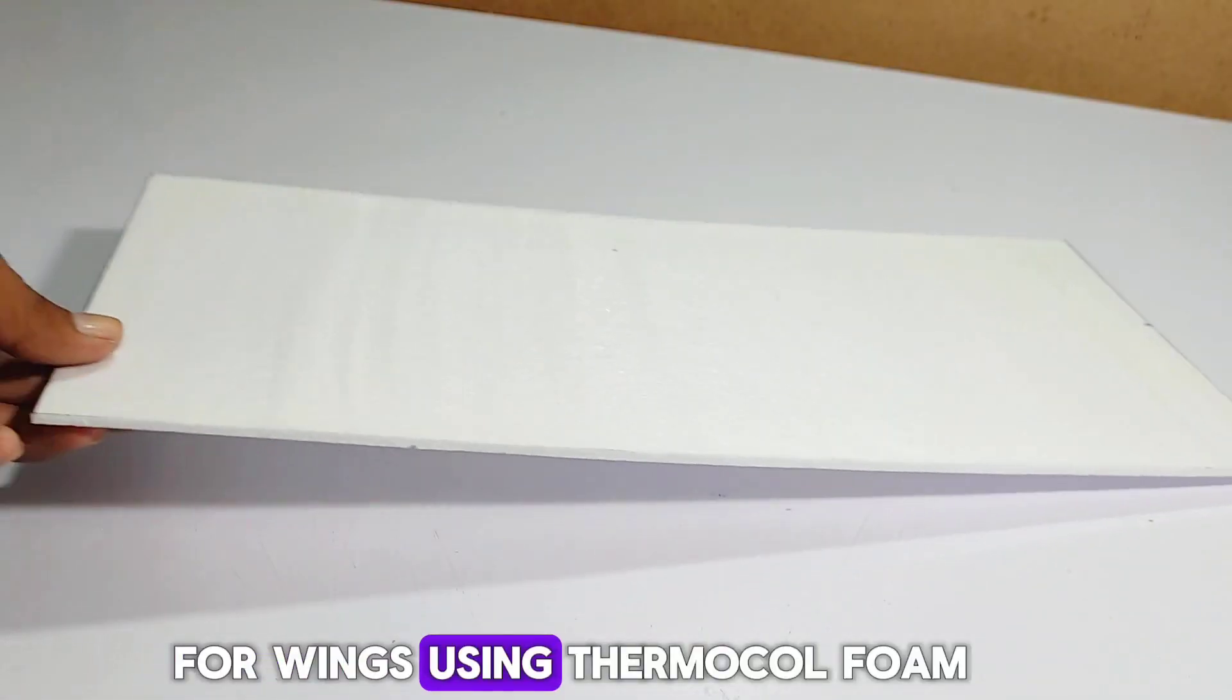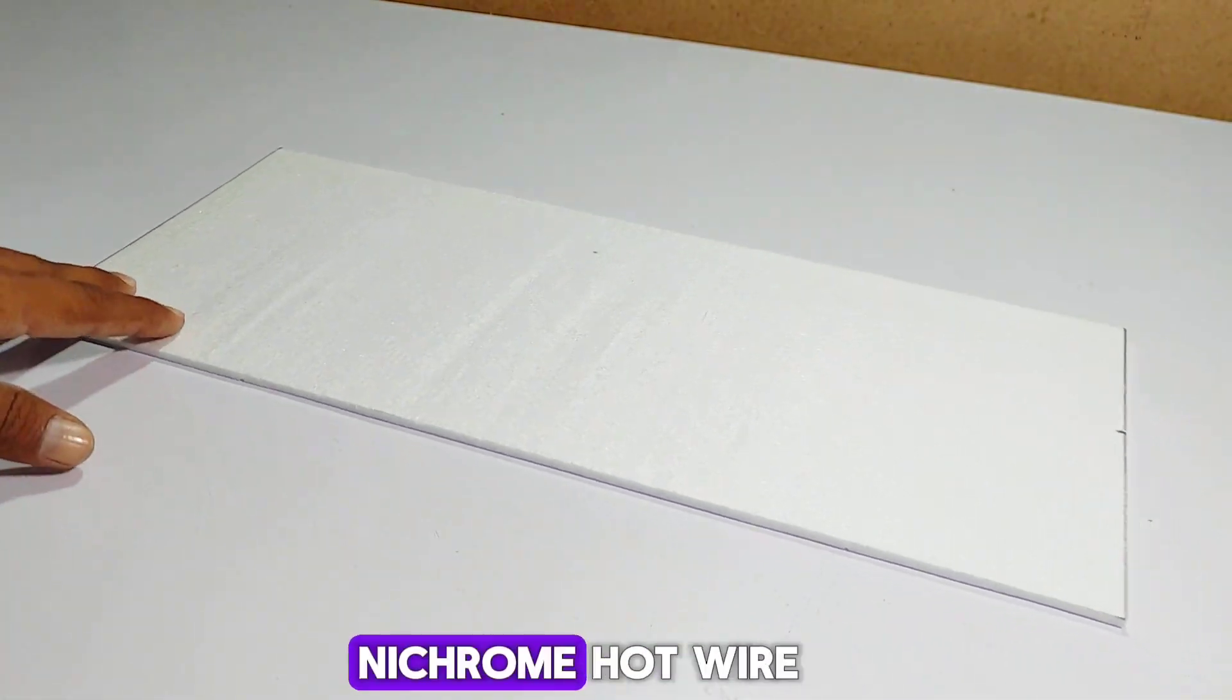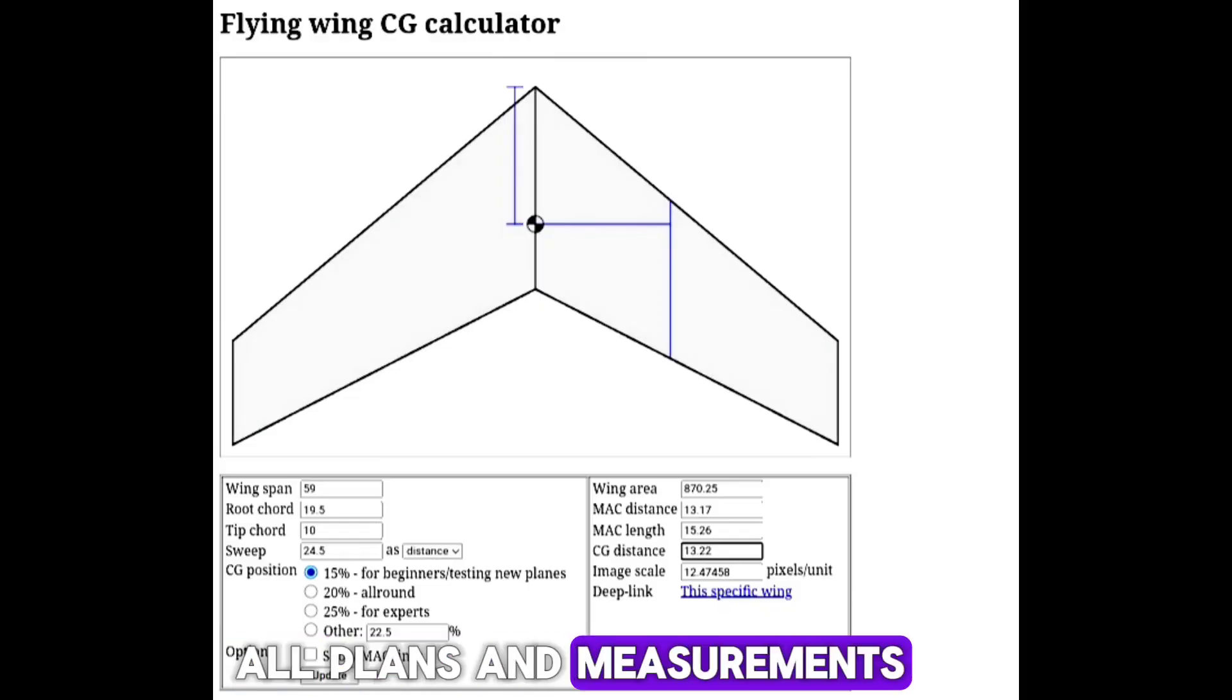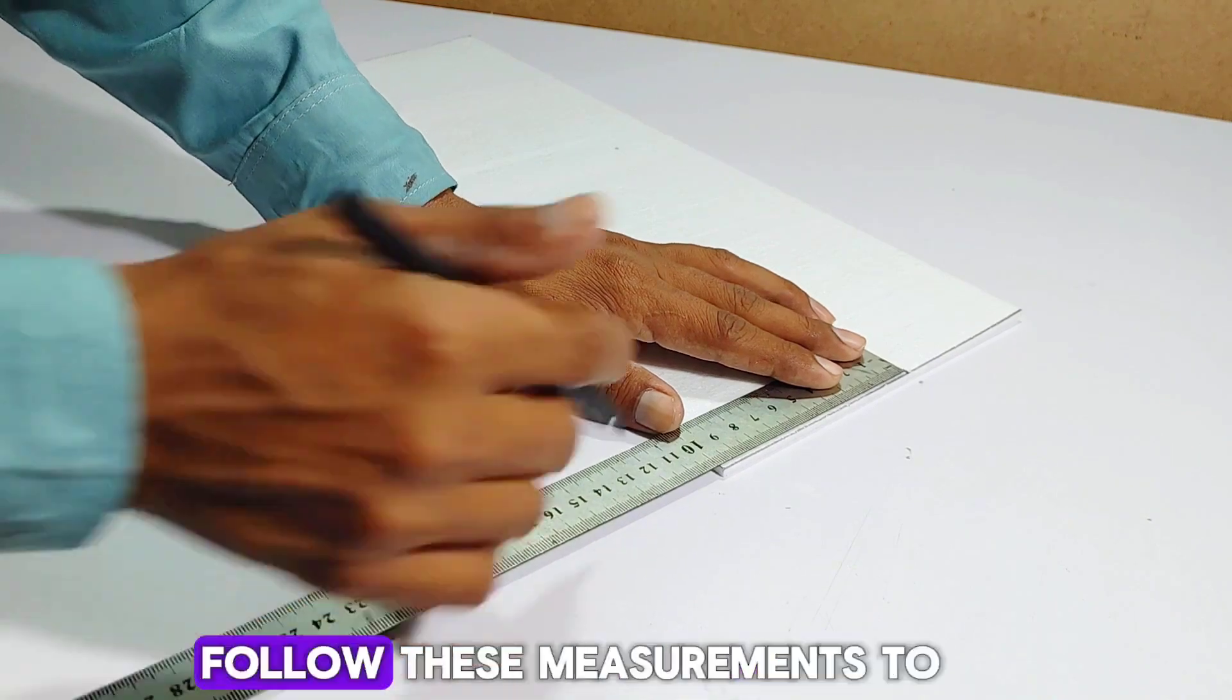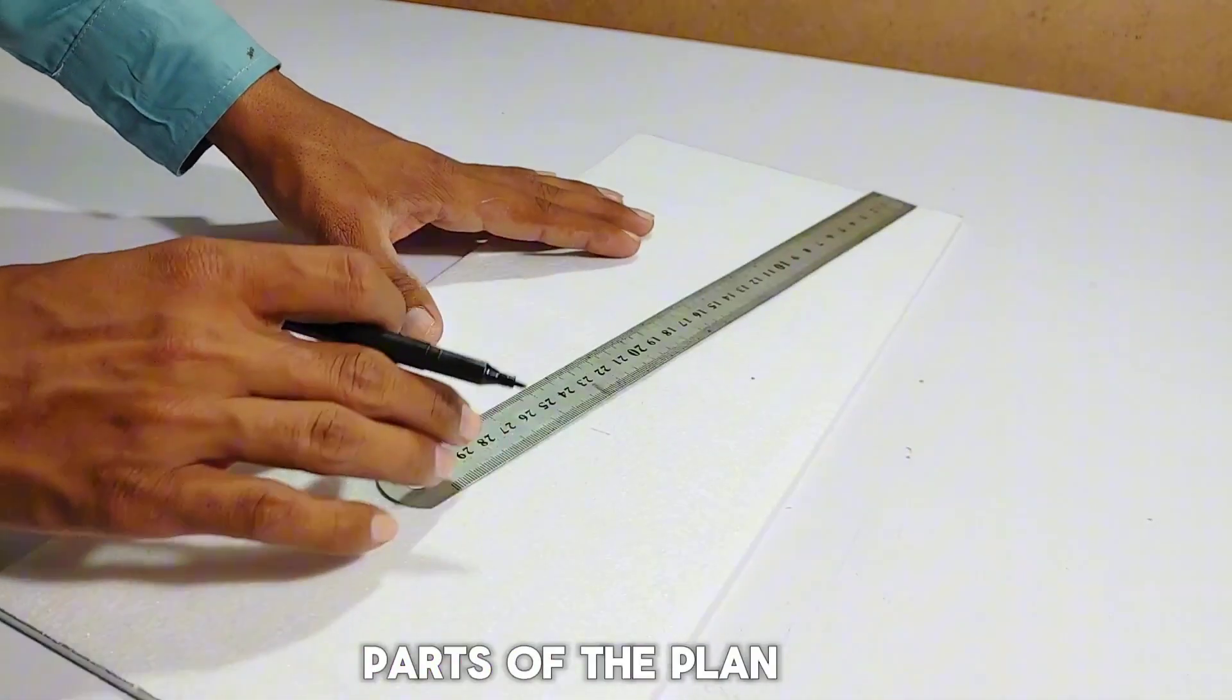For wings, use thermocol foam 3mm, cutting by nichrome hot wire. All plans and measurements are given in the template. Follow these measurements to draw and cut wing parts of the plane.